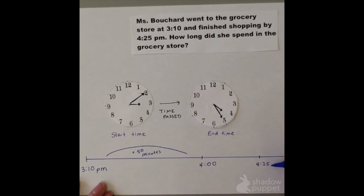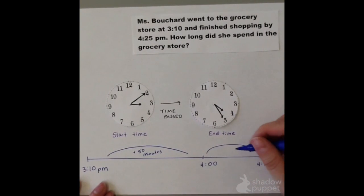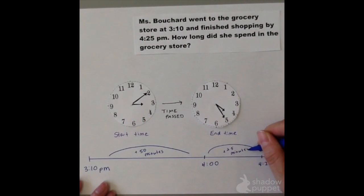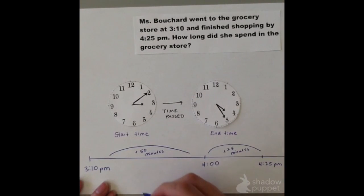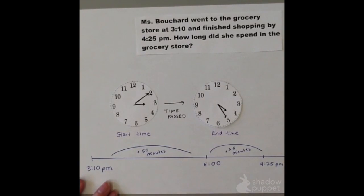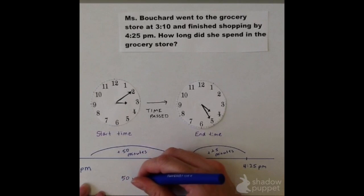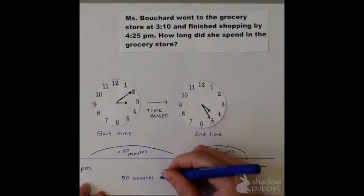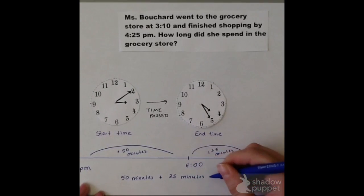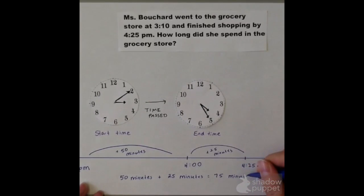Then if I plot my ending time, which would be 4:25 p.m., I think, well, what's the elapsed time between 4:00 to 4:25? That's 25 minutes. I can then take each of these two separate time segments — the 50 minutes and the 25 minutes — and add them together: 50 minutes plus 25 minutes would give me 75 minutes. And 75 minutes is the total elapsed time.